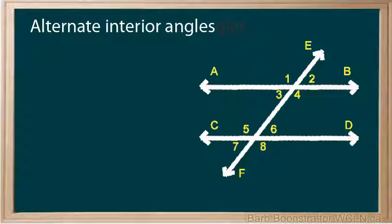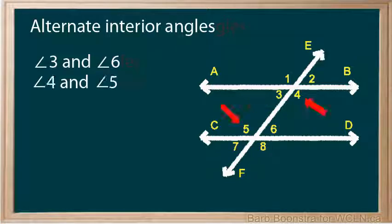Alternate interior angles are pairs of angles that are between the parallel lines and on alternate sides of the transversal. Angle 3 and angle 6 are alternate interior angles. Angles 4 and 5 are another pair of alternate interior angles.